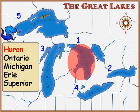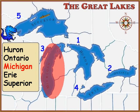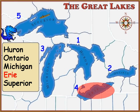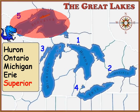H is for Lake Huron. O is for Lake Ontario. M is for Lake Michigan. E is for Lake Erie. S is for Lake Superior.